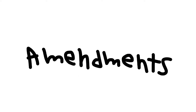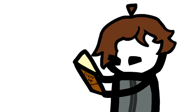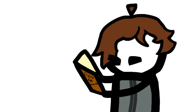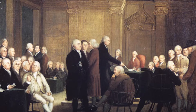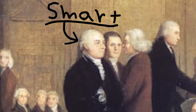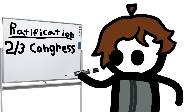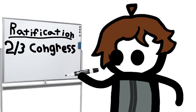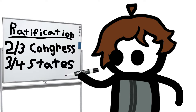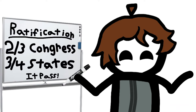Article 5: Amendments. This will be explained in more detail in a future video, but this article goes through the ratification of amendments and changing the Constitution. The Founding Fathers knew the world changes whether they want it to or not, so this article was written for that case. Basically, if two-thirds of each House of Congress and three-fourths of the states vote in favor of an amendment being passed, then it will pass.